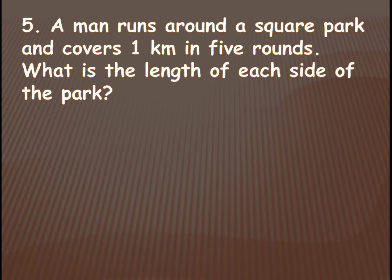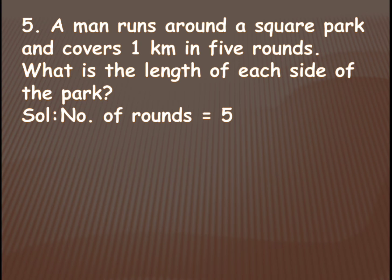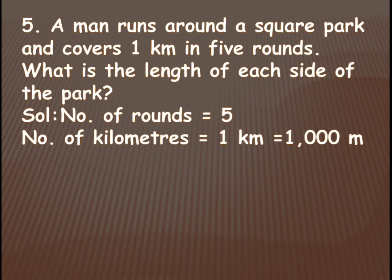He completes five rounds, meaning five perimeters. First round — one perimeter finished; second round — two perimeters; third, fourth, fifth round — that means five times the perimeter is equal to one kilometer. Now from here we need to find the side. So first, let's write what is given: the number of rounds he ran is five.